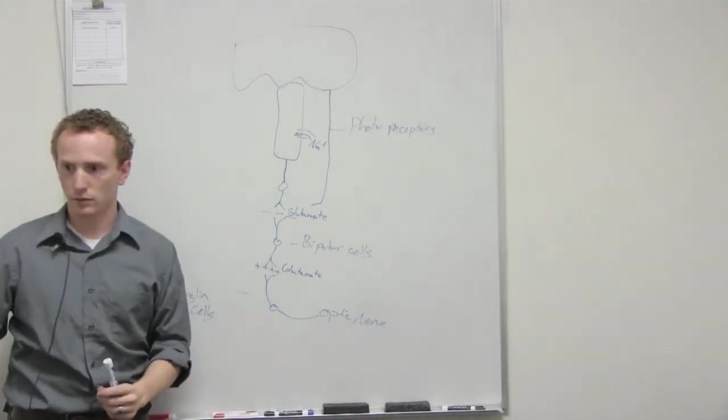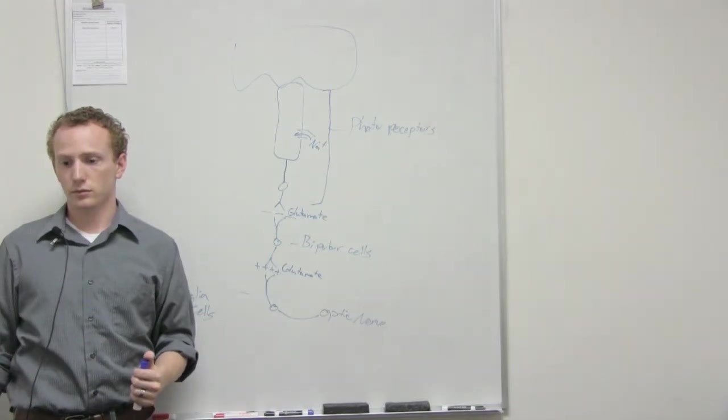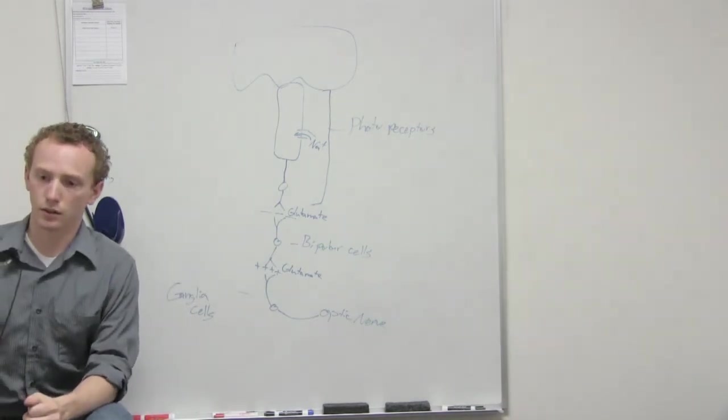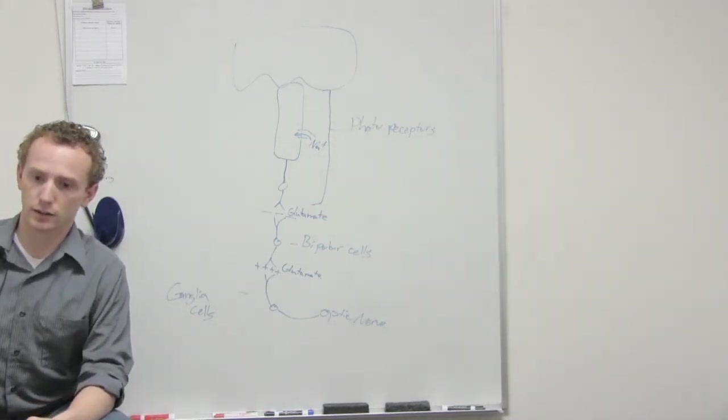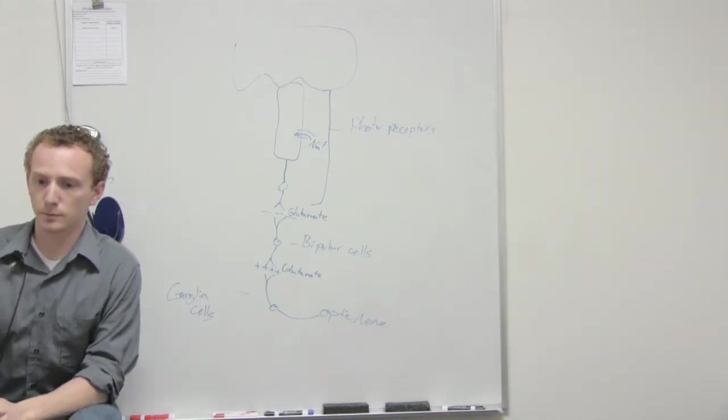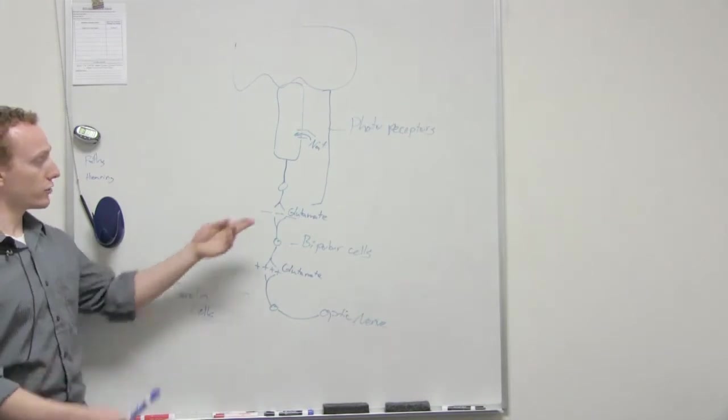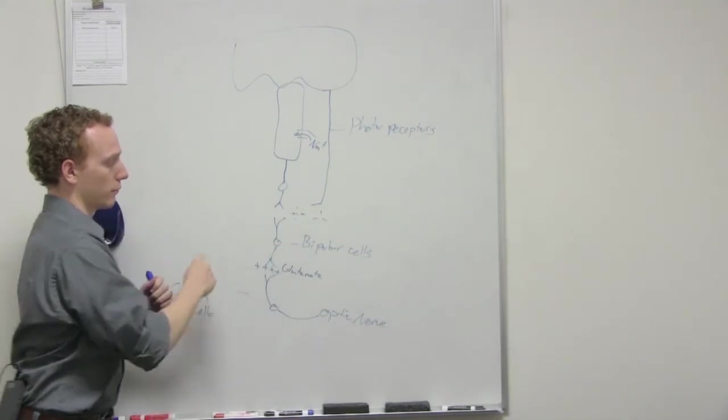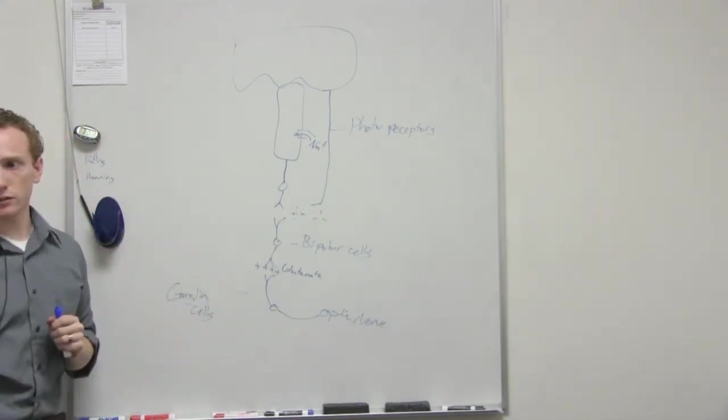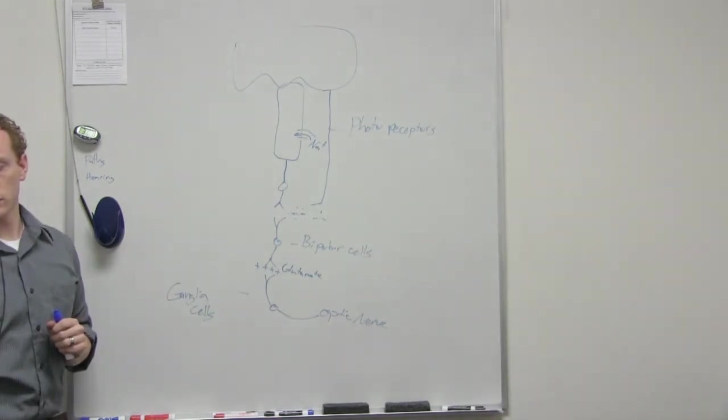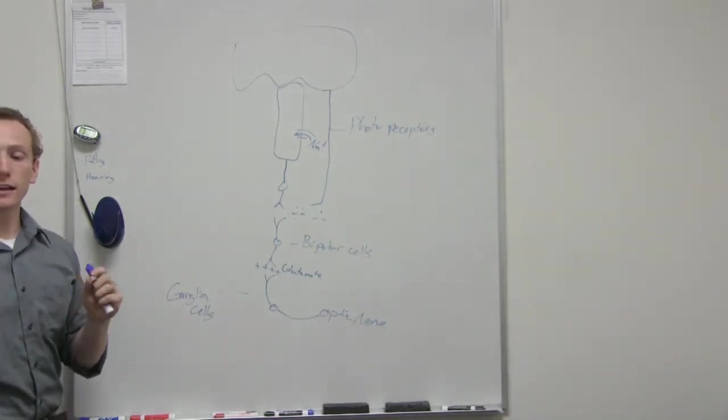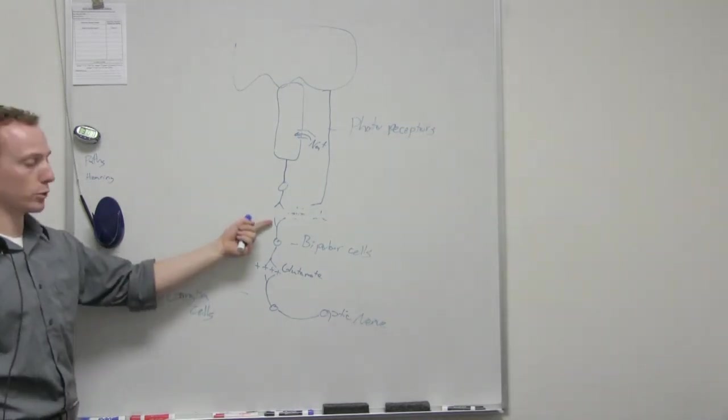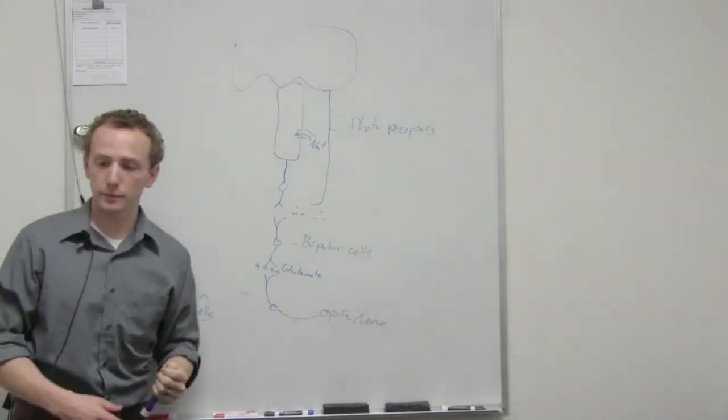So it would be light reflects off this, closes the sodium gates, bipolar cell can send signal, and then it goes to the optic nerve. Is glutamate not being released? Glutamate is no longer being released here in the light. But then it can start being released here. But if glutamate inhibits, why is it being released here? Glutamate inhibits certain receptors, not other receptors. The receptors right here are inhibited by glutamate. The receptors here are activated by glutamate.